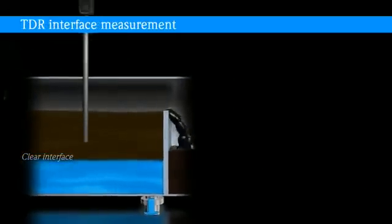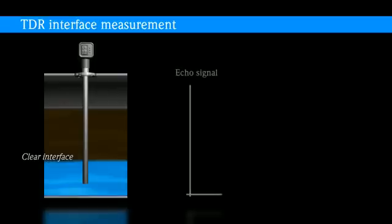Guided radar technology is based on microwave pulses which are guided along a probe and are partly reflected from the product surface and at the interface layer.